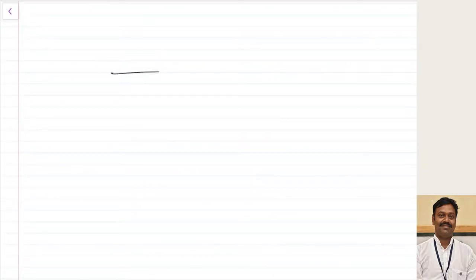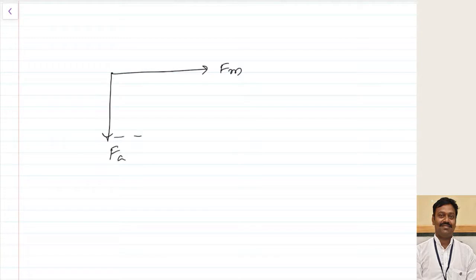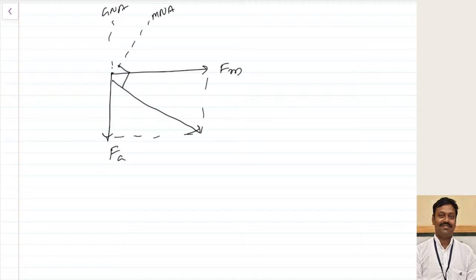In the last class we have seen that when the armature flux is present — this is the main field flux and this is the flux due to the armature — the resultant flux will be shifted. The geometrical neutral axis stays fixed, but the magnetic neutral axis shifts because of the effect of armature reaction, which is only a cross-magnetizing effect. There are different techniques to avoid this cross-magnetizing effect.